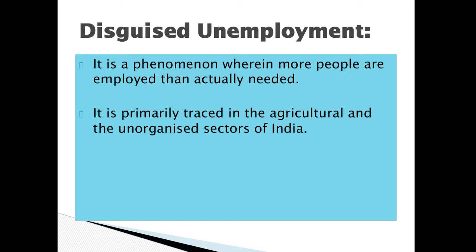Let's take one more example. In a field, five people are required. Five people know their work — the nature of work is divided and they know the production after the harvesting. They have limited land. Now, the people working in that field increase to seven or eight, or you can say double.